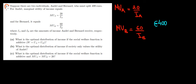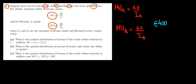Let's work on question 1 in this video. We have two guys, Andre and Bernard, who want to split 400 euros. The marginal utility of the first guy is given, and of the second guy is 60 over his income. In part A, we want to know what is the optimal distribution of income if the social welfare function is the following.